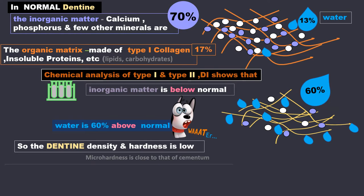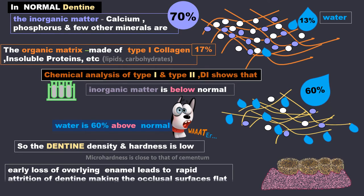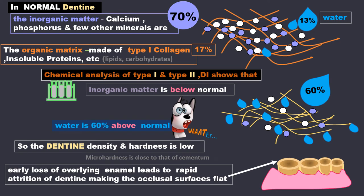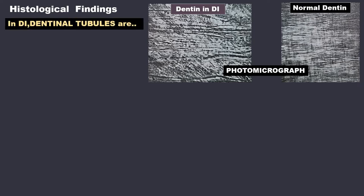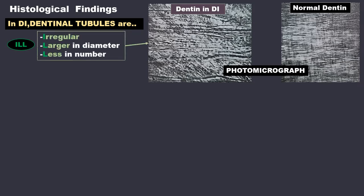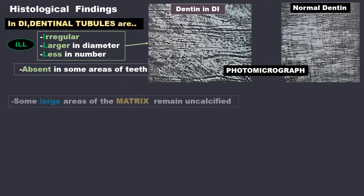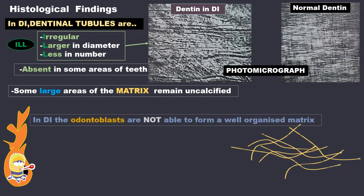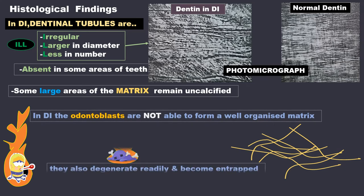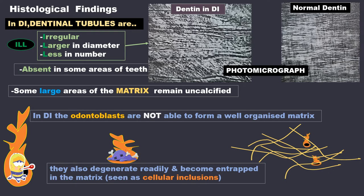Early loss of overlying enamel leads to rapid attrition of dentine, making the occlusal surfaces flat. In DI, the dentinal tubules are irregular, larger in diameter, and less in number. They can also be absent in certain areas of the teeth. Some larger areas of the matrix also remain uncalcified. The odontoblasts are not able to form a well-organized matrix; they also degenerate readily and become entrapped in the matrix, and these are seen as cellular inclusions.